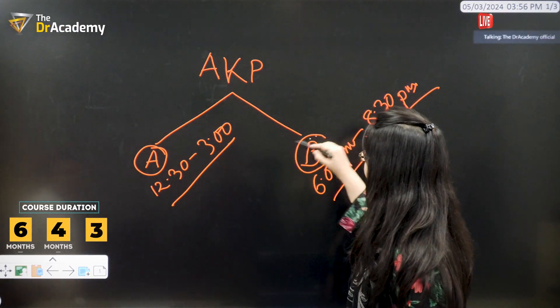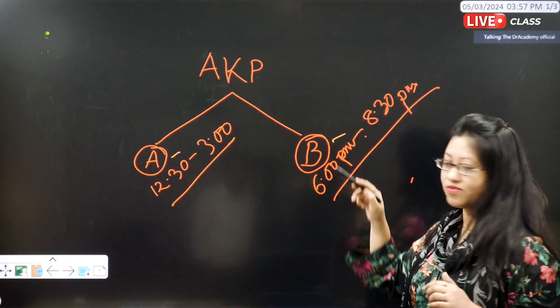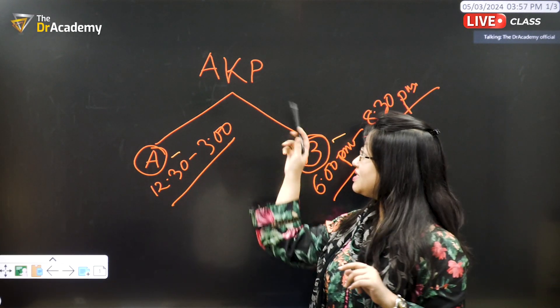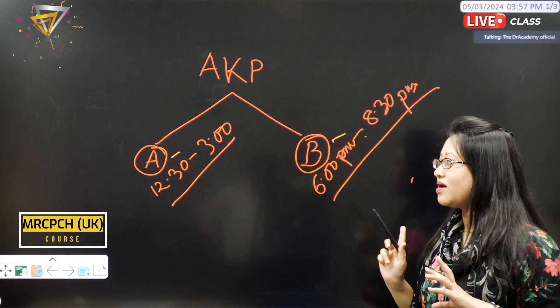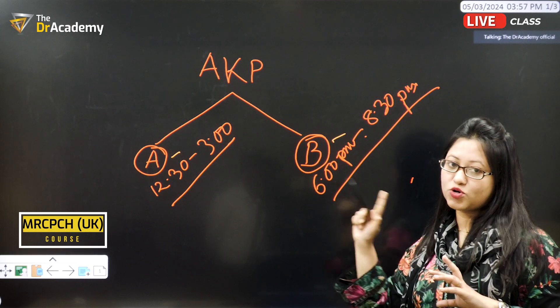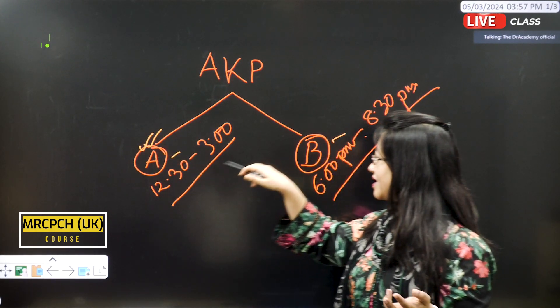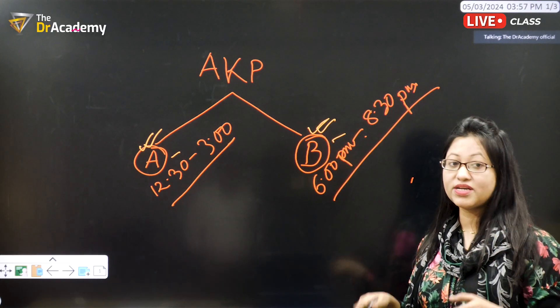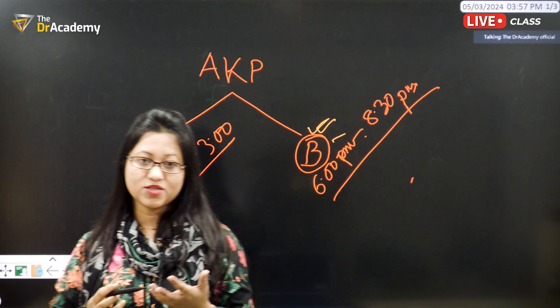This Part A and Part B, previously in case of Part 1, Part A was foundation of practice and Part B was theory and science. But in case of AKP, there is no such name. Why? Because in case of Part 1, the two exams comprise different types of questions. But in case of AKP, the same topics and same number of questions will be coming.